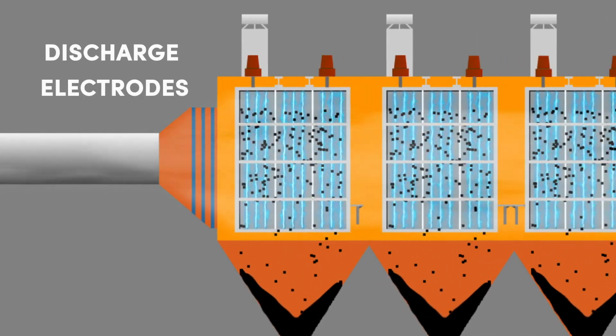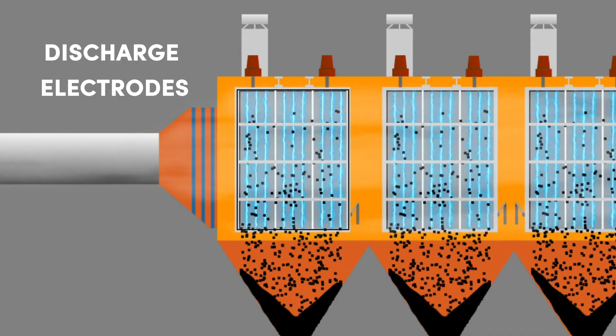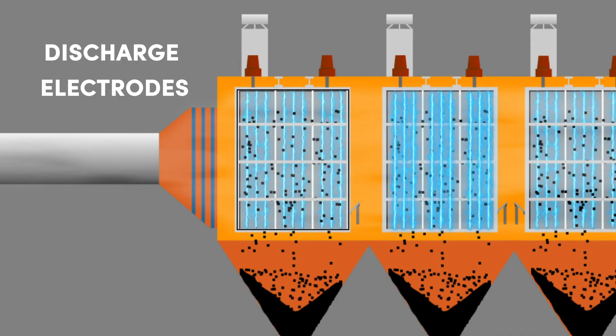The discharge electrodes are divided into fields. Most ESPs have three or four fields in series. However, very large units may have as many as 14 fields in series.